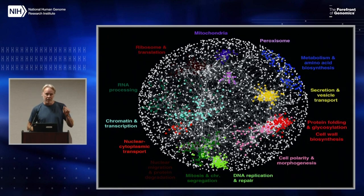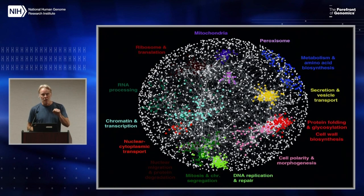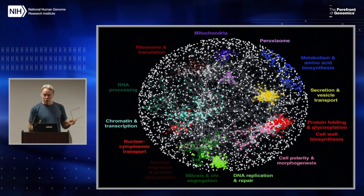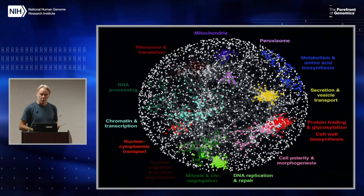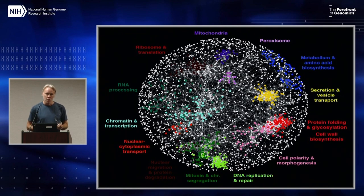If gene A is epistatic with a bunch of genes and gene B is epistatic with a similar bunch of genes, then you draw a connection between A and B. And doing that, miraculously, genes that are sharing the same function start to cluster together, and you can start to do this guilt by association and assign function to genes of unknown function.